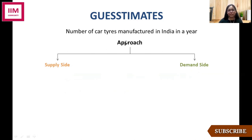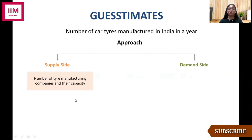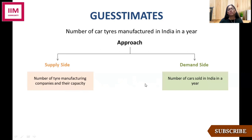In the supply side approach for this guestimate, our main objective is to calculate the number of car tires, but the sub-objective here would be to see how many tire manufacturing companies there are and what their capacity is. I would take their annual capacity and come up with a rough figure for how many car tires are manufactured in India. The other approach would be to look at the number of cars sold in India in a year, and then based on that calculate the car tires manufactured.